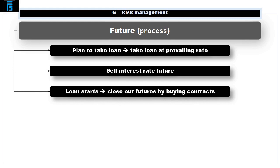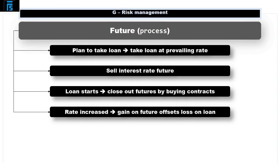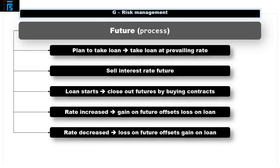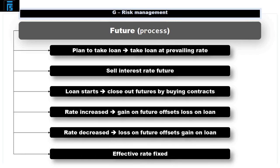When the loan starts, the company will close out the futures by buying contracts, i.e. a commitment to receive interest — simply the opposite of the original futures position. If interest rates have increased between the decision to take out the loan and the loan starting, the loan will have become more expensive than anticipated. However, if the rate has increased, the company will be receiving more interest on the futures bought than it is paying on the futures sold. This gain on the futures offsets the loss on the loan. If interest rates decrease, the opposite happens and the loss on the futures offsets the gain on the loan. Either way, the effective rate when the two aspects are combined is fixed.